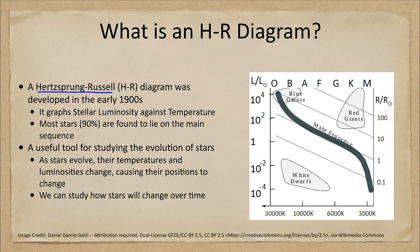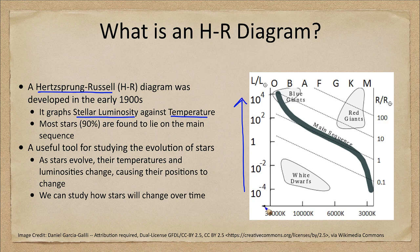When scientists want to study the properties of something, they often graph them and look for patterns, because patterns show that there is often a relationship. In this case, we are graphing the luminosity, or the brightness of a star, against the temperature. Here we see luminosity on the y-axis increasing upward.